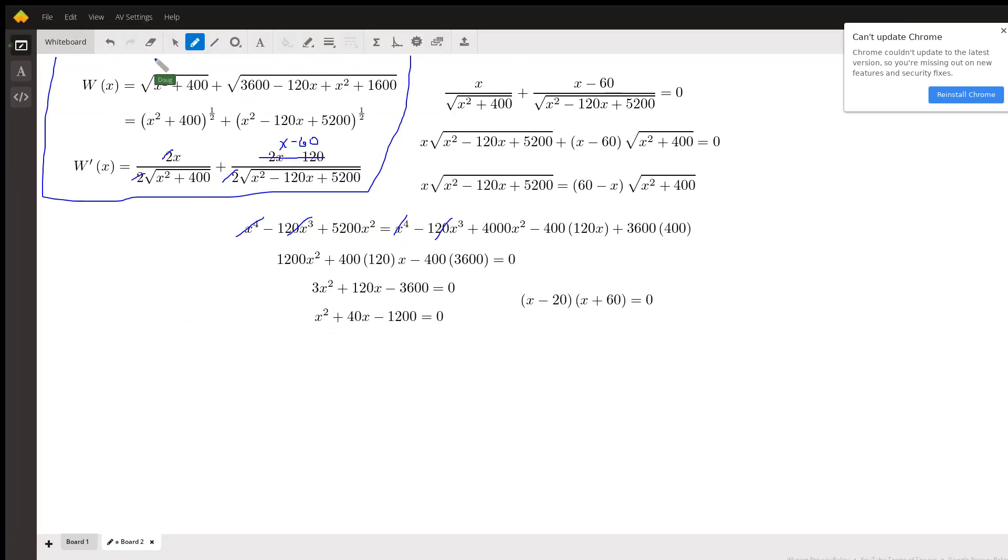Go to board two. Here's our wire length of wire function right here, which I have rewritten with rational exponents, combining some similar terms. So the derivative using the power rule and the chain rule gives us this. Notice I cancelled out these twos.